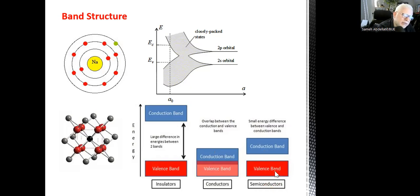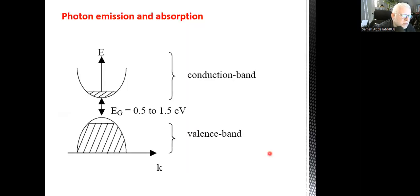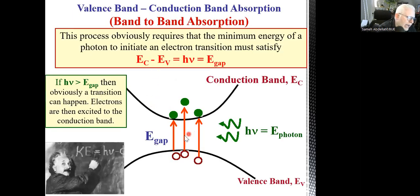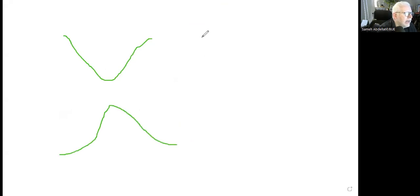The question is: is the top of the valence band typically aligned to the bottom of the conduction band? The answer may be yes or no. In some materials, the top of the valence band is directly aligned to the bottom of the conduction band — we call these direct band gap semiconductor materials. In other materials, we have what's called an indirect band gap.